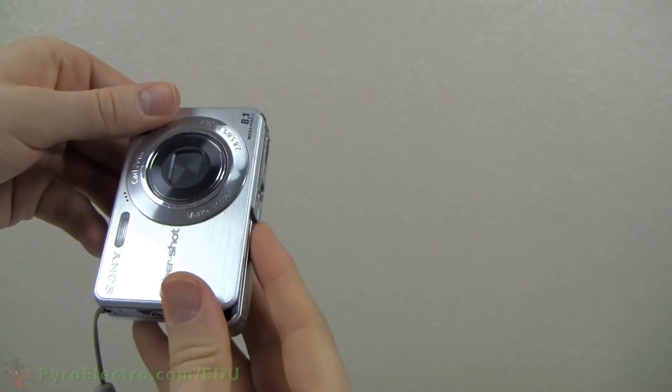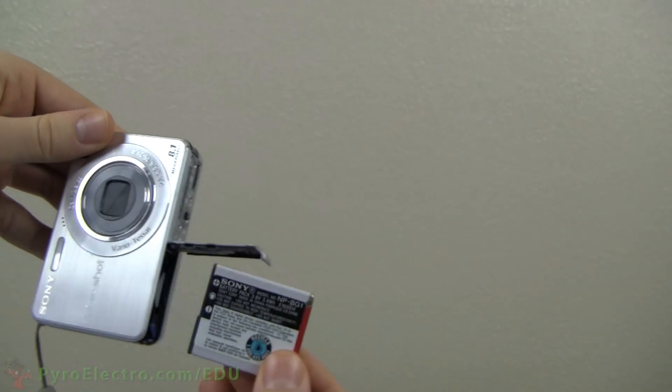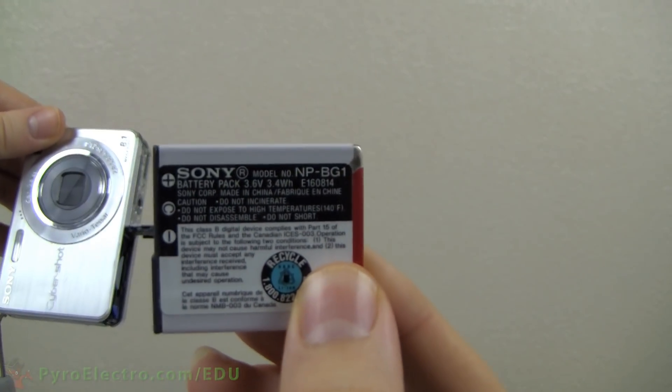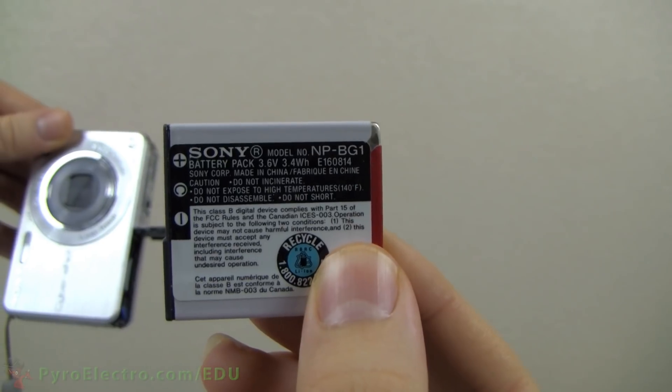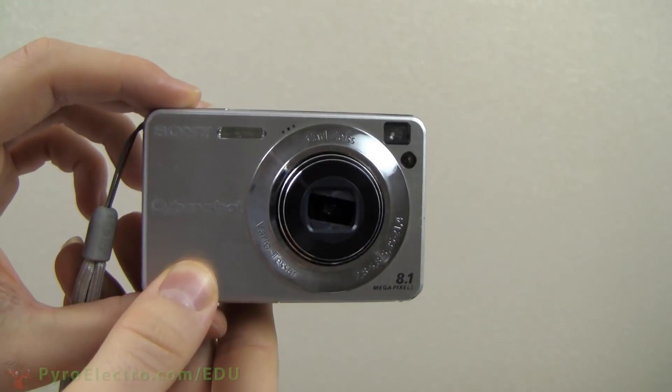If you think about a standard point-and-shoot camera, it has a very bright flash that is powered by a tiny battery. In order to make that flash so bright, a large amount of electrical energy must be stored and then released when you click the button to take a picture and use the flash.